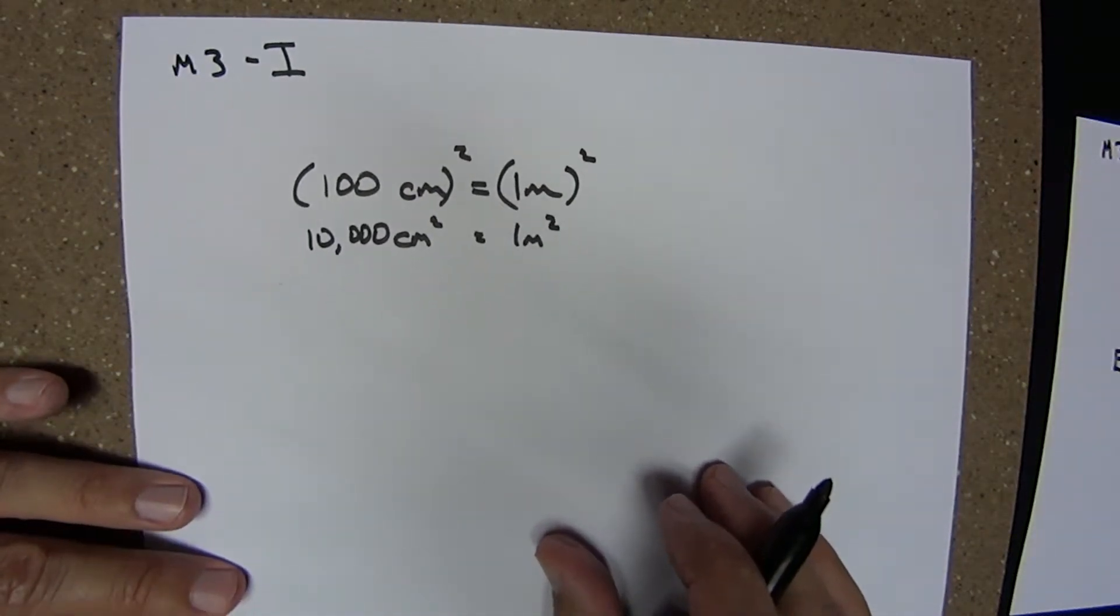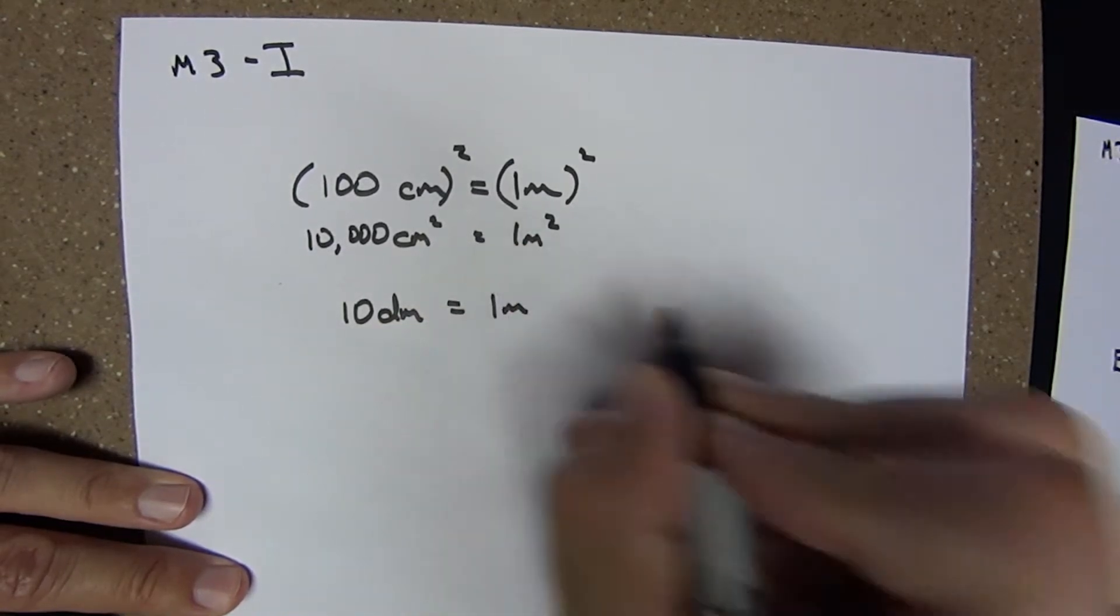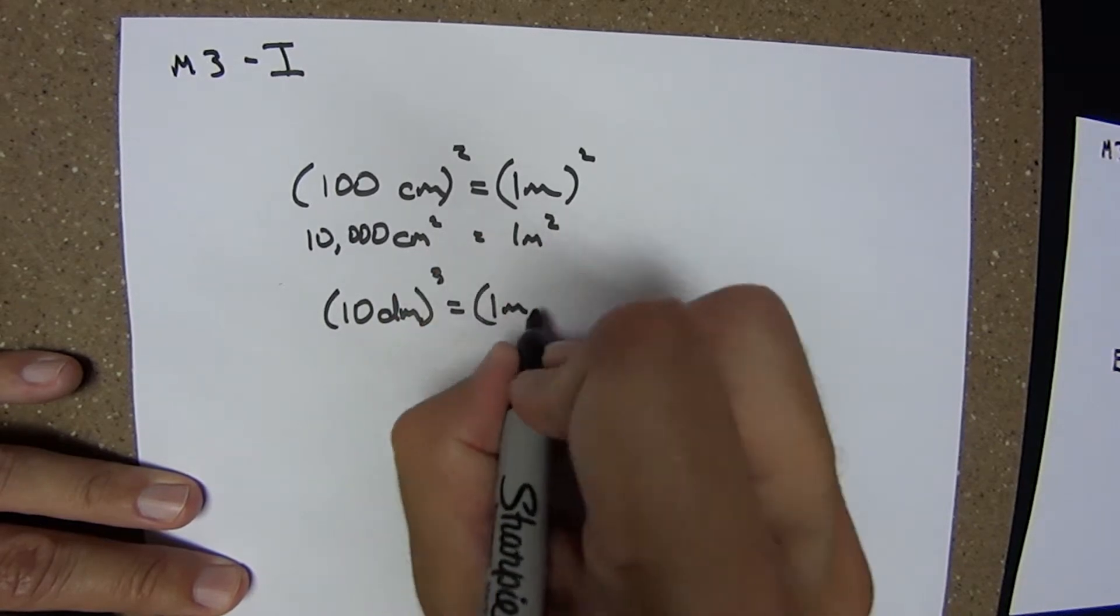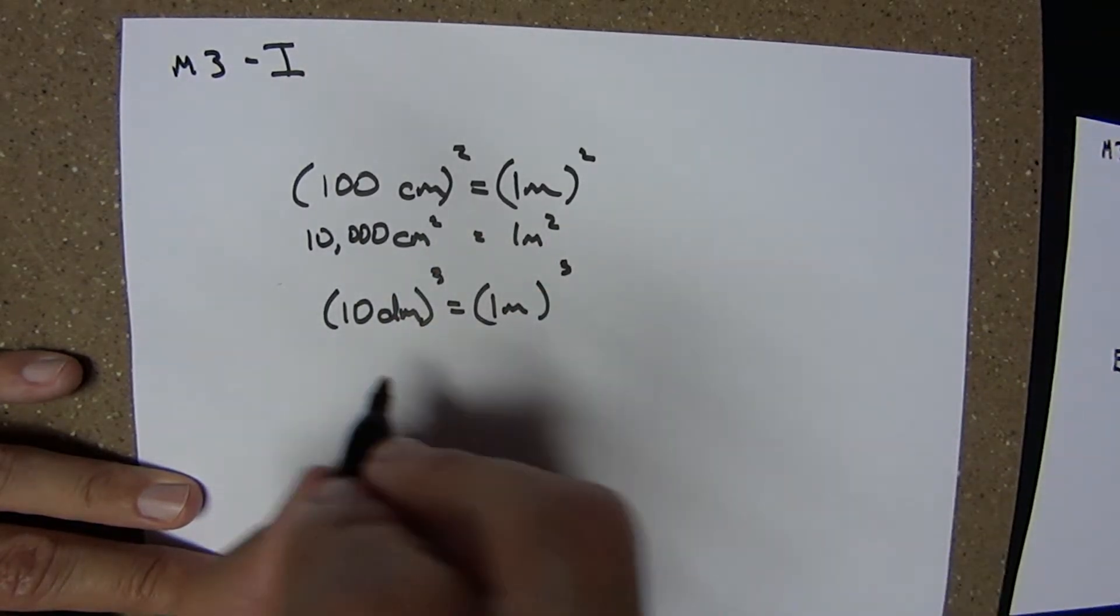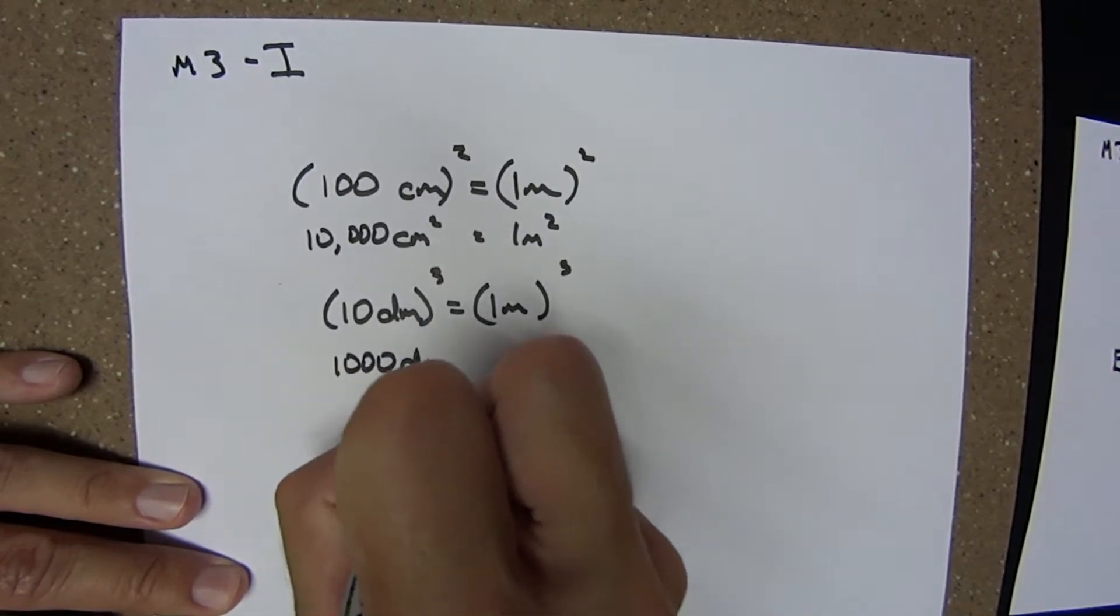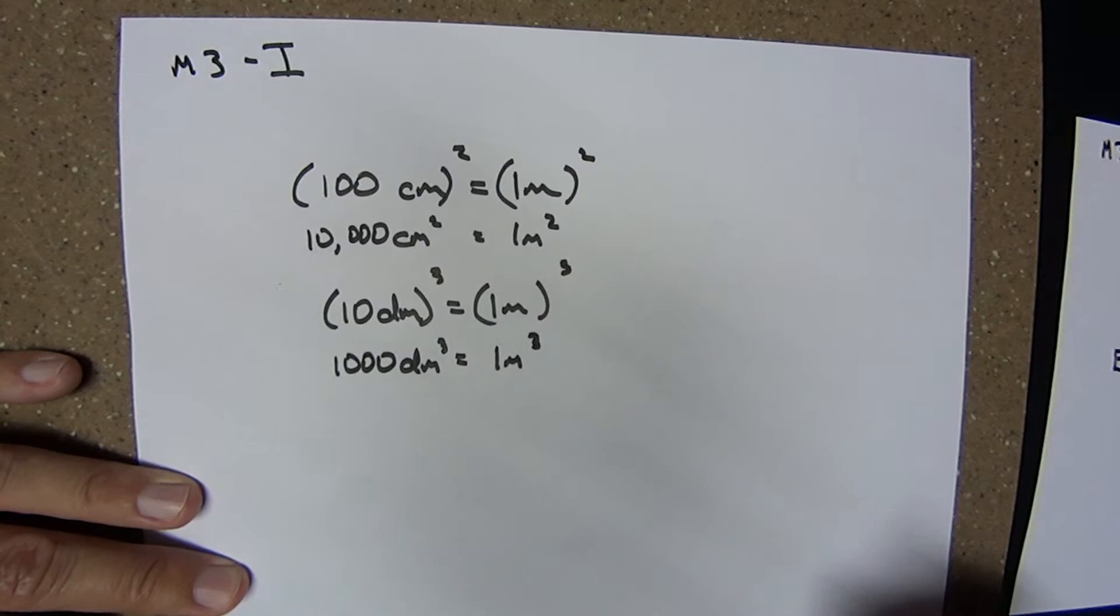Using SI prefixes, 10 decimeters equals 1 meter. If we cube both sides of this equality, we get 10^3, or 1,000 cubic decimeters equals 1 cubic meter.